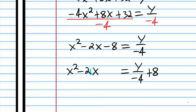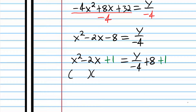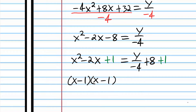Now we need to complete the square. To do that, I'll get the negative 8 out of the way by putting it on the right side. To complete the square: take the coefficient of x, divide by 2, then square it. Negative 2 divided by 2 is negative 1, and negative 1 squared is positive 1. So we're going to add 1 to both sides — and now this is a perfect square.